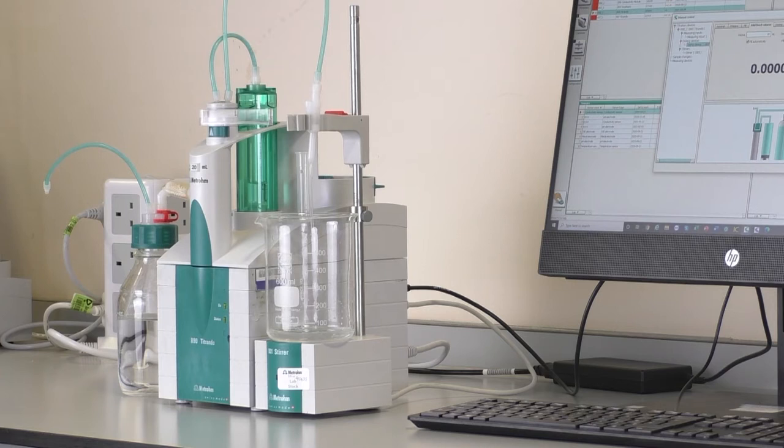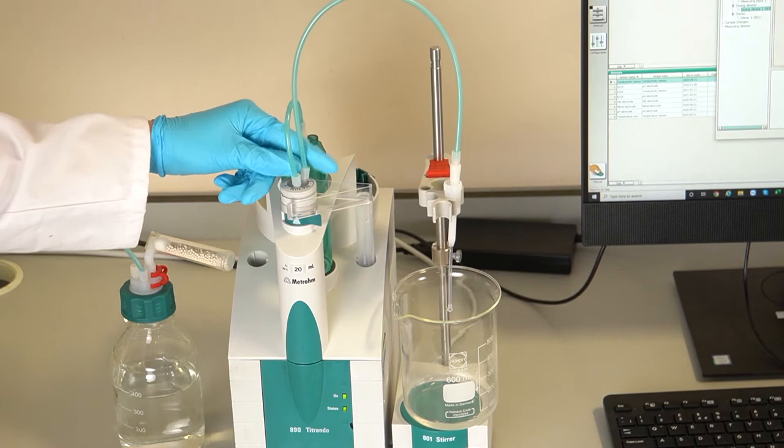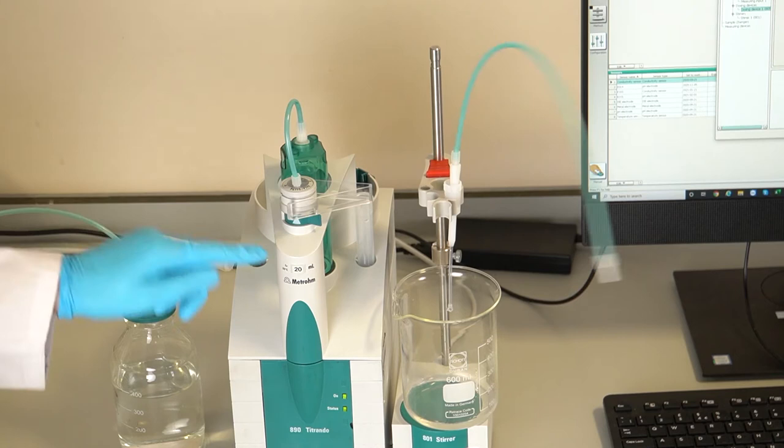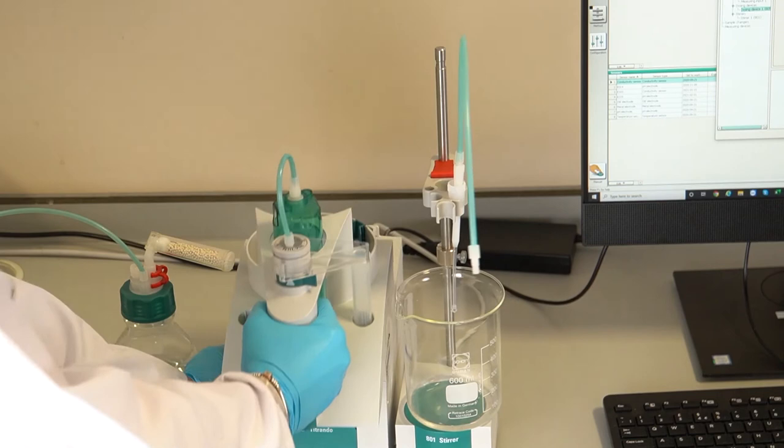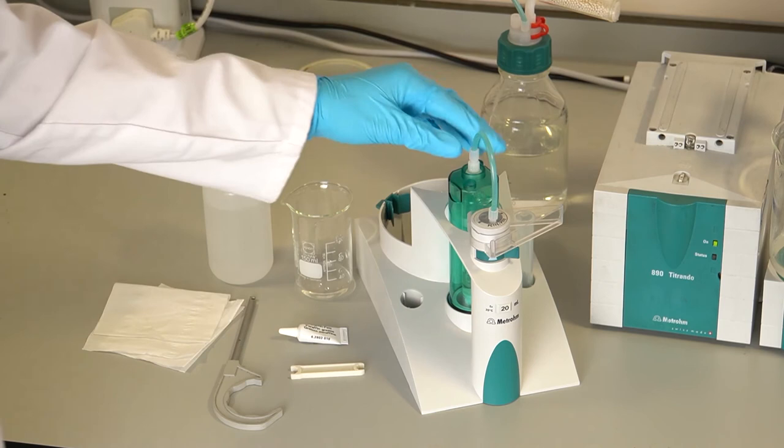Remove the remaining tubing. Check that the switching lever is over to the right. Remove the exchange unit from the drive. Unscrew and remove the cylinder unit.